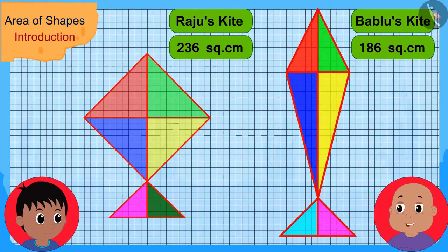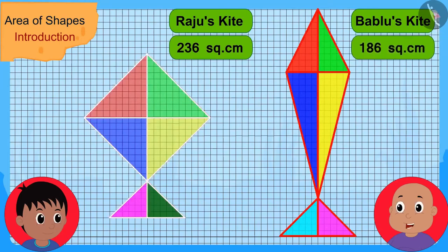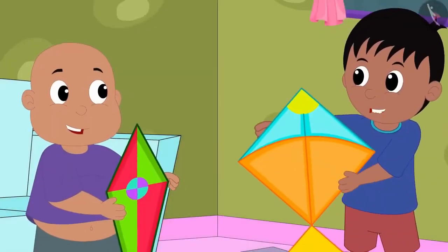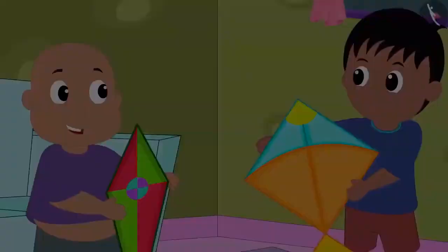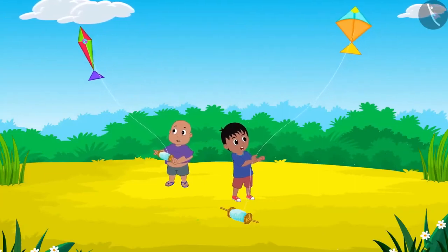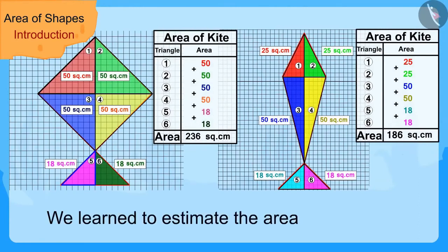Bablu confirmed: Raju's kite's area is 236 square centimeters and Bablu's kite's area is 186 square centimeters, so Raju's kite is bigger. Let us go to the playground and fly our kites, Raju said, and the two friends went to the playground to fly their kites. In this video, we learned to estimate the area of shapes. In the next video, we will learn more about it through some interesting examples.